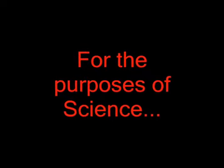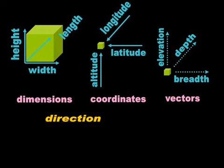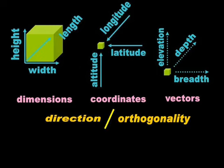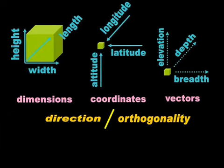In science, dimensions, coordinates, and vectors have only two attributes: direction and orthogonality. Direction and orthogonality are strictly qualitative concepts. We don't need to learn trigonometry to understand that a cross has one stick perpendicular to another.